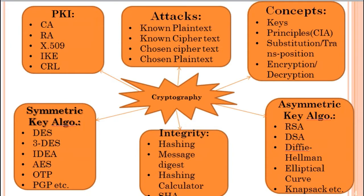The cryptography fundamental is divided into six components. First is concept. Second is attacks that are performed on cryptographic algorithms. Third is types of symmetric algorithms, and fourth is asymmetric algorithms. Fifth is integrity algorithms, which help us verify that our data is authentic and unmodified. Sixth and last is PKI, which means public key infrastructure.